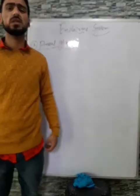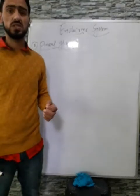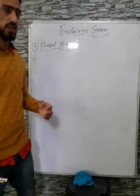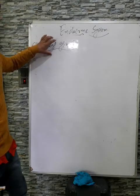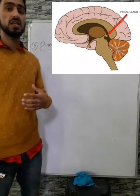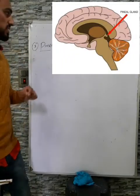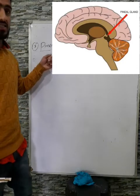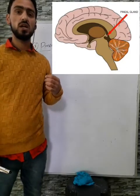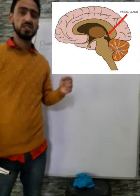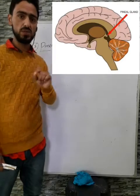We were studying about the endocrine system, in which we learned about the hypothalamus and the pituitary gland — both located in the brain. Today's topic is the pineal gland, which is also present in the brain, in the diencephalon of the forebrain, specifically on the epithalamus. It is a pea-shaped gland.